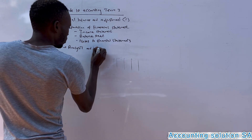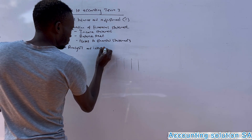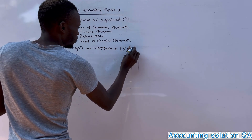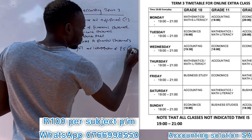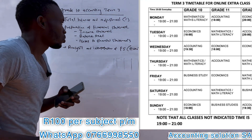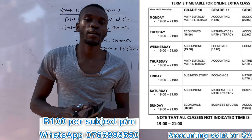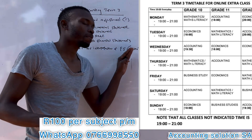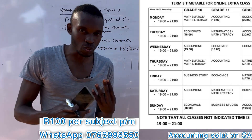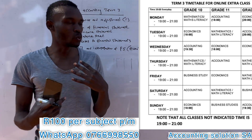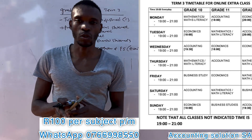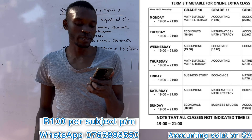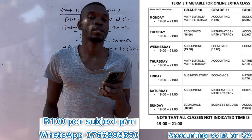The last chapter is what we call analysis and interpretation of financial statements — the other name is ratios. You are going to be given an answer sheet with those ratios and formulas that you are going to use to calculate a ratio, so this chapter is very simple.